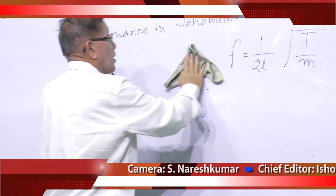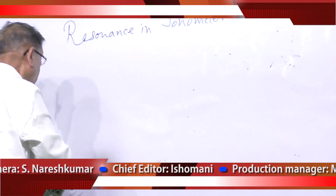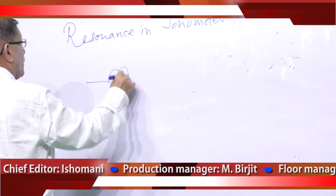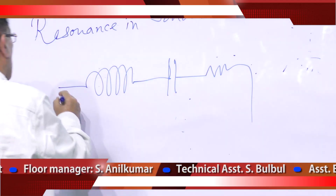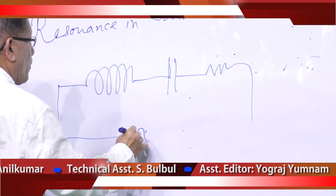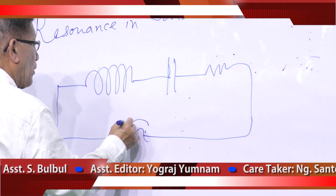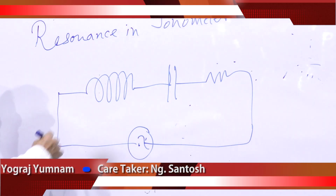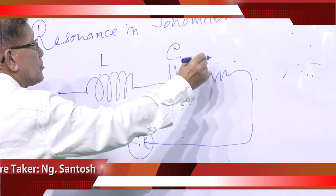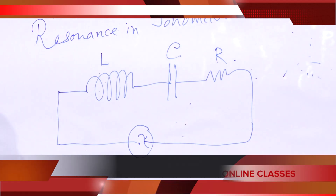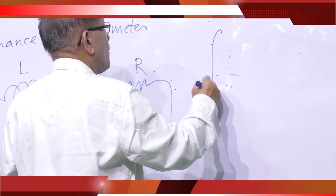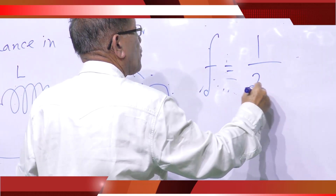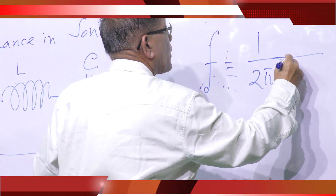Now let us see the other resonances. What are the other resonances? Resonance in electrical circuits. We have an LCR circuit — an inductor, a condenser, and a resistance — and we drive this LCR circuit with an alternating current, meaning a variable frequency voltage. We can vary the frequency of the applied voltage. The natural frequency of this LCR circuit is given by: F equals 1 / (2π √(LC)).